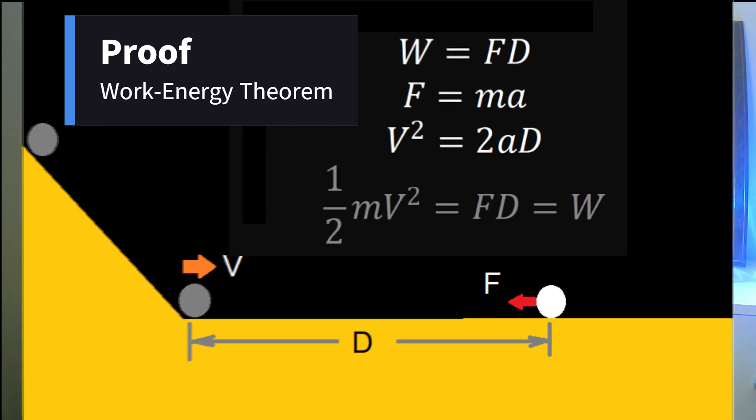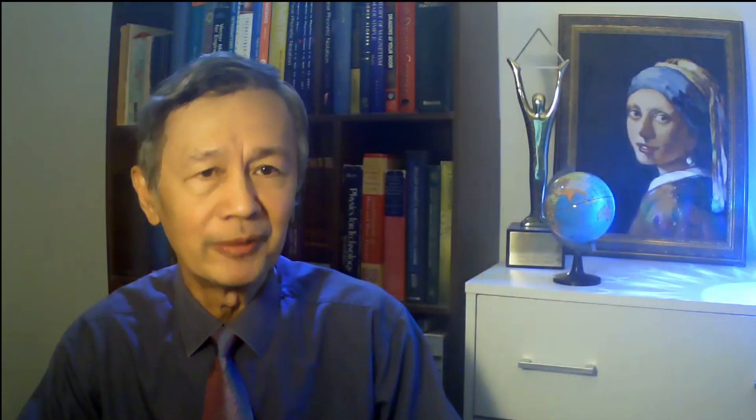we obtain half mv squared equal to fd, where we have used Newton's second law, f equals ma, done by using high school physics.